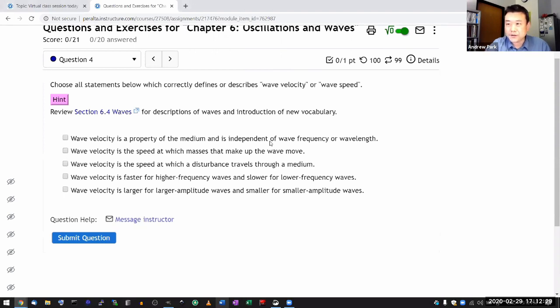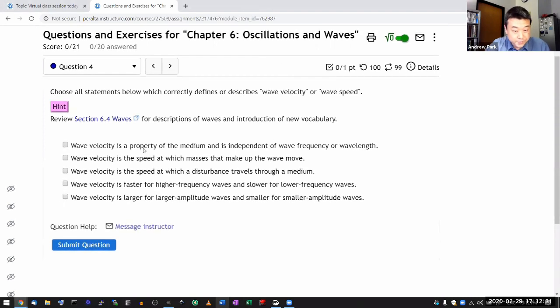So in cases like this we'll usually say review the section because that's where you'll find the necessary information. Let me first check the correct answer here. The correct answer should be, so it's describing the property of wave velocity is that it's generally independent of wave frequency and wavelength. So that's one of the choices. Wave velocity is speed at which, that's not right. So I'm going to not select that.